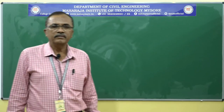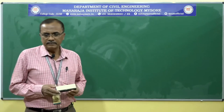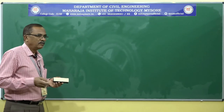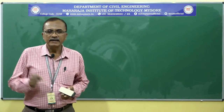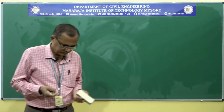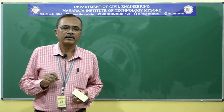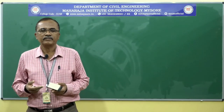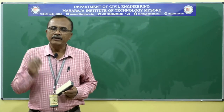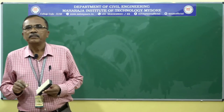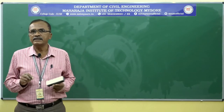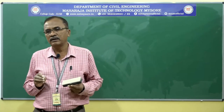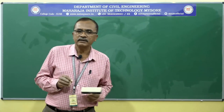Welcome back. In the last class, we discussed about the index properties and we came to know what index properties are. The various index properties are the color of soil, grain specific gravity, moisture content, field density, relative density, particle size distribution or grain size analysis, and consistency of soil. We also discussed about the color of soil and the shape of the soil.